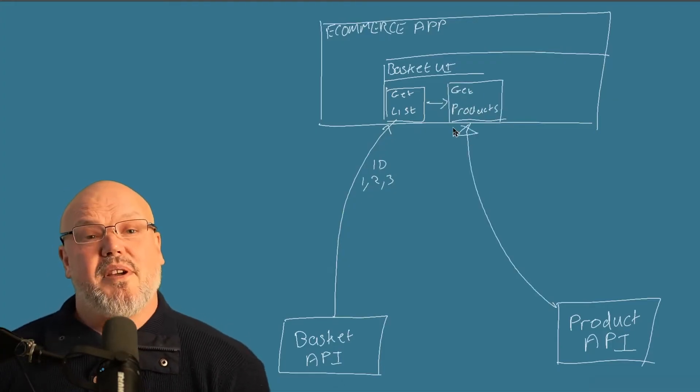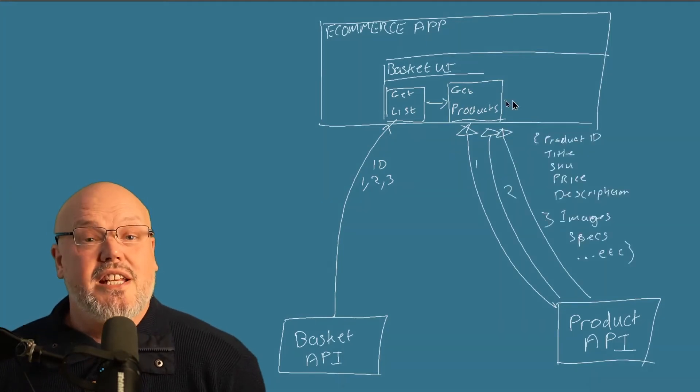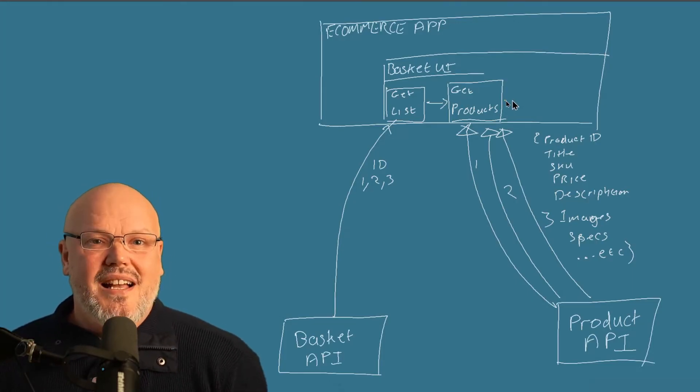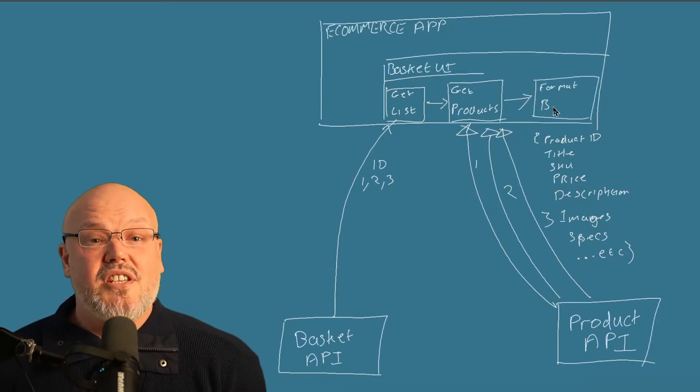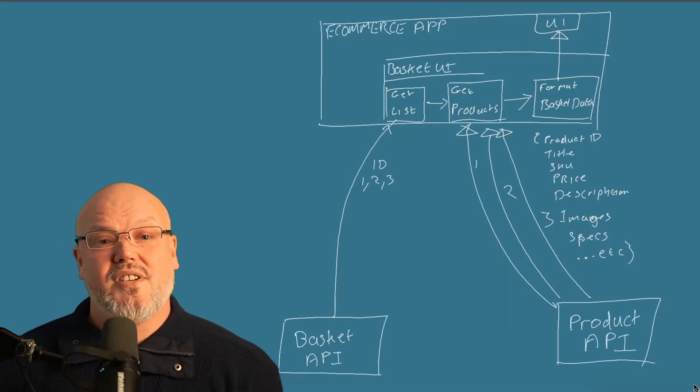Let's consider the scenario of viewing a basket. You'll first make a call to the basket API, which may return a set of IDs. You'll then call the product API for each of the IDs and get back a whole set of product information, when all you really need is a list of products with their ID, their name, their price, and maybe a thumbnail image. This means that every application frontend needs additional code and logic to translate the data from the microservice into the right format for the UI. What this example demonstrates is that you also need to orchestrate many API calls before you get the final data format.